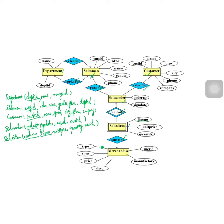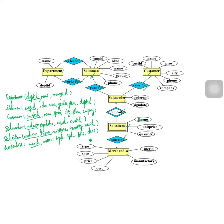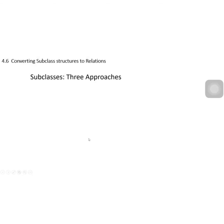The last entity is merchandise, which is also called product. Merchandise_id is the primary key, with attributes: maker, type, specification, price, and description.